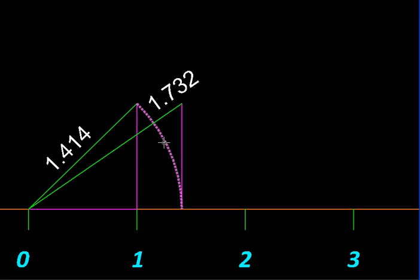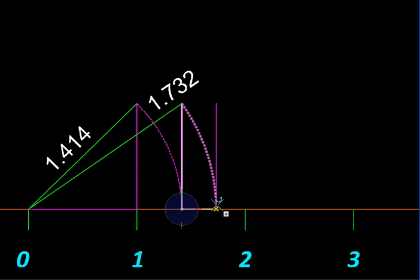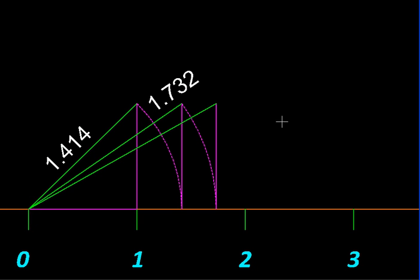Then we erect the perpendicular of unit length and construct the hypotenuse like this. So this will be square root of four. Let's check, yes indeed this is square root of four, which is two as expected.